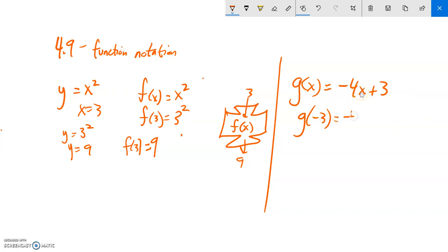Notice what I'm saying is x equals negative 3, so you just substitute it in. It takes the place of this x. Negative 4 times negative 3 plus 3. Negative 4 times negative 3 is 12, 12 plus 3 is 15. So g of negative 3 would be 15.